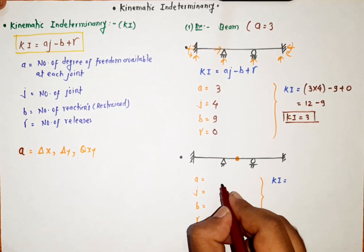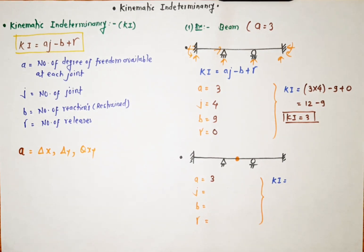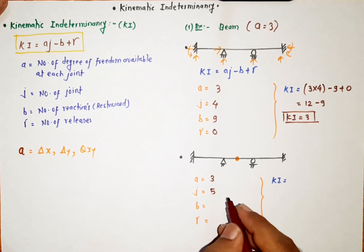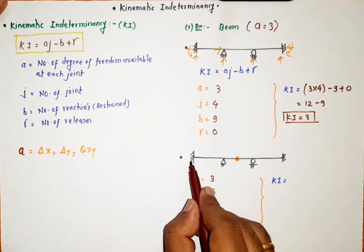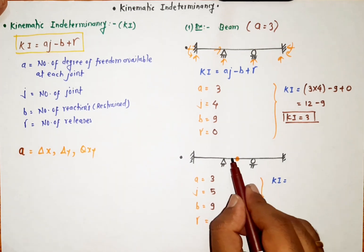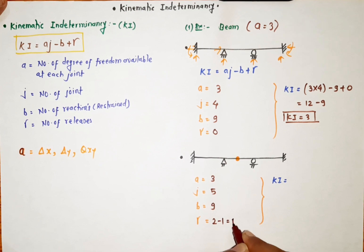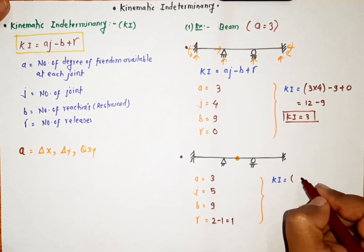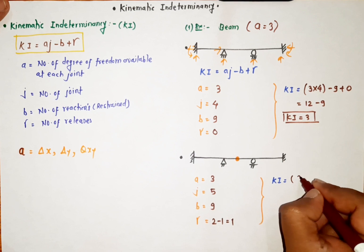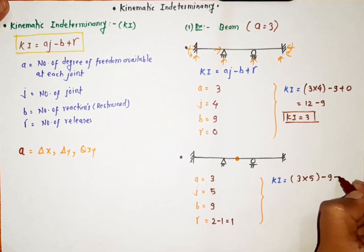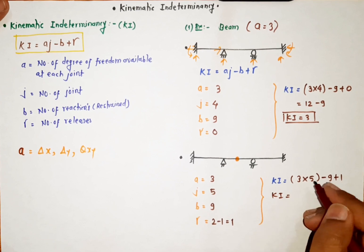Similarly, for the next beam which has an internal hinge: the number of degrees of freedom at each joint a = 3 (for a beam it is always three). The number of joints j = 5. The number of reactions b = 9 (three for each fixed support: 3 + 3 + 3 = 9). For the number of releases: there are two members meeting at the internal hinge, so releases = 2 − 1 = 1, meaning γ = 1. Therefore kinematic indeterminacy = 3 × 5 − 9 + 1 = 15 − 9 + 1 = 7.